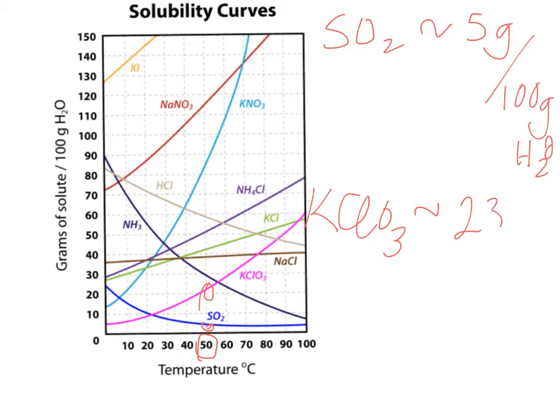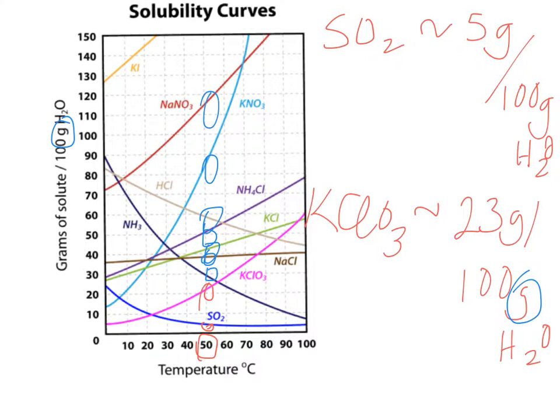23 grams per 100 grams of H2O. So I know yesterday we were using milliliters, so sometimes different graphs can use grams or milliliters interchangeably, so don't be alarmed by this. So you just keep reading up the graph for each and every one of those solutes and you'll be able to get all those different values at 50 degrees Celsius.